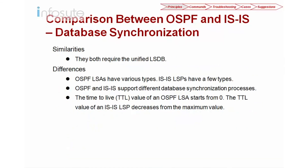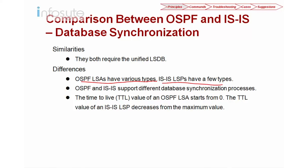For database synchronization between OSPF and ISIS: both use a unified LSDB since both run link-state algorithms and create the same type of LSDB. The differences: OSPF uses various LSA types (Type 1, 2, 3, 4, 5, and 7), while ISIS only uses LSPs. They also support different database synchronization processes. The TTL value of OSPF LSAs starts from 0 and increments, while the TTL value of ISIS LSPs decreases from the maximum value starting at 3600 seconds.